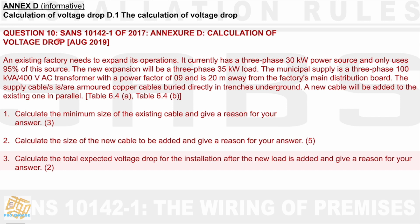We have here question 10 and it says an existing factory needs to expand its operations. It currently has a three phase 30 kilowatt power source and only uses 95% of its source. The new expansion will be a three phase 35 kilowatt load. The municipal supply is a three phase 100 kVA 400 volt AC transformer with a power factor of 0.9. And technically that should be 0.9. So even in the question paper it is 0.9 but you do not get a power factor of 9, that can only be 0.9.